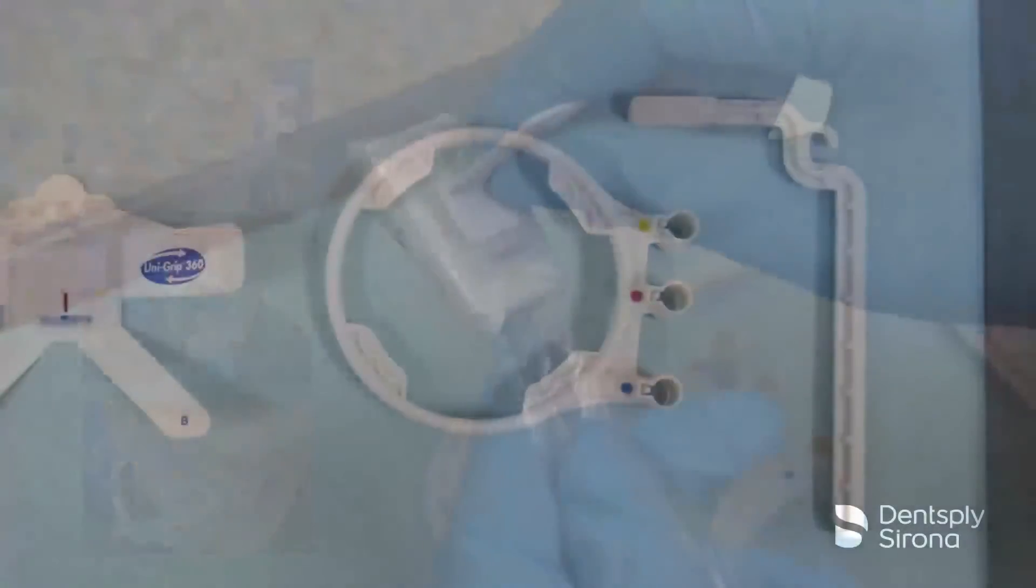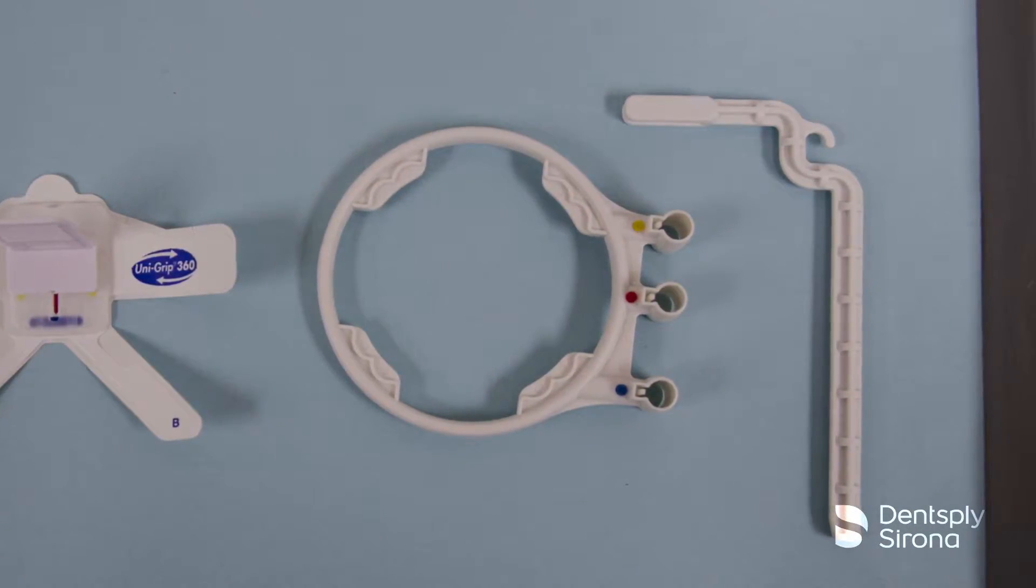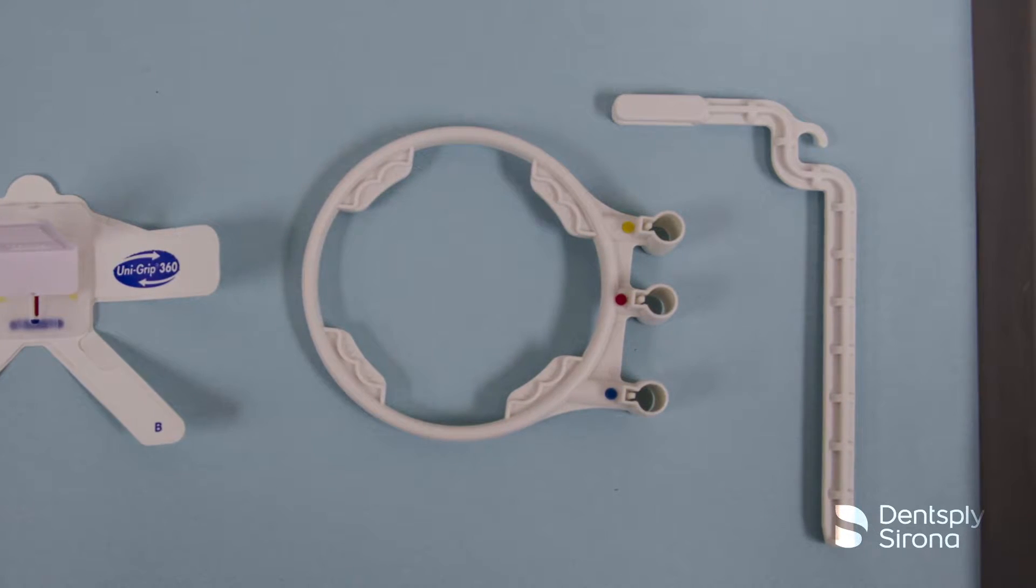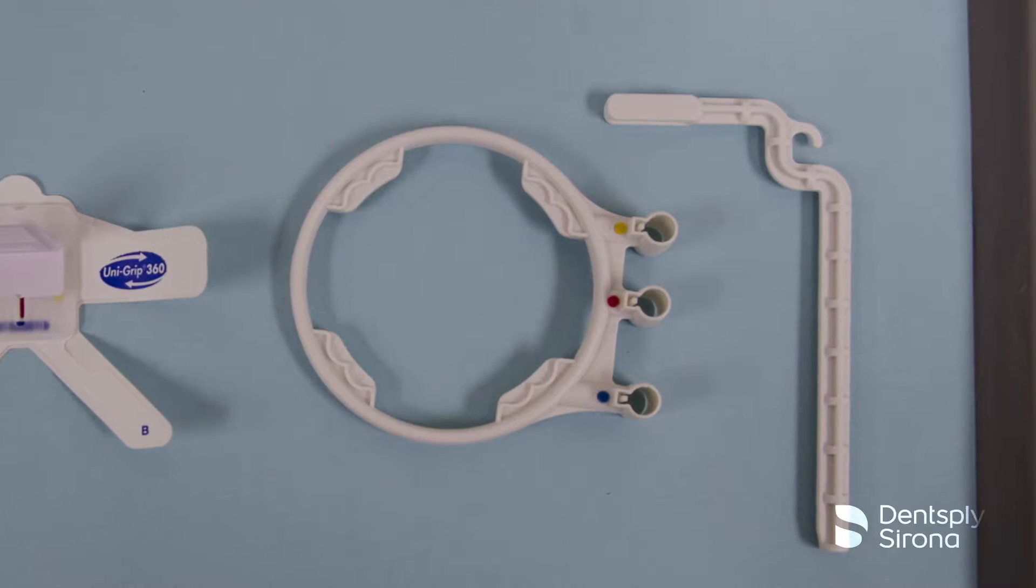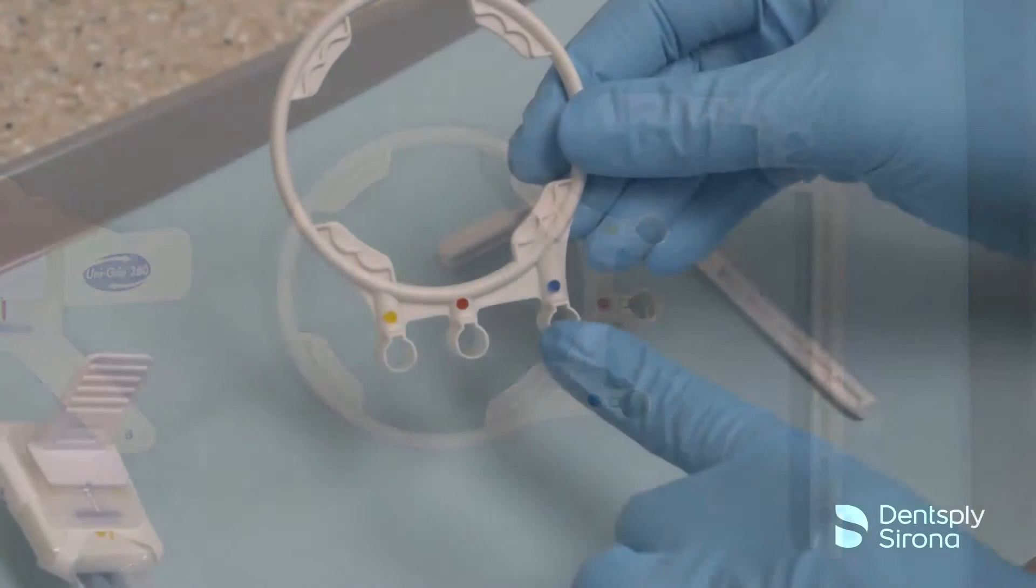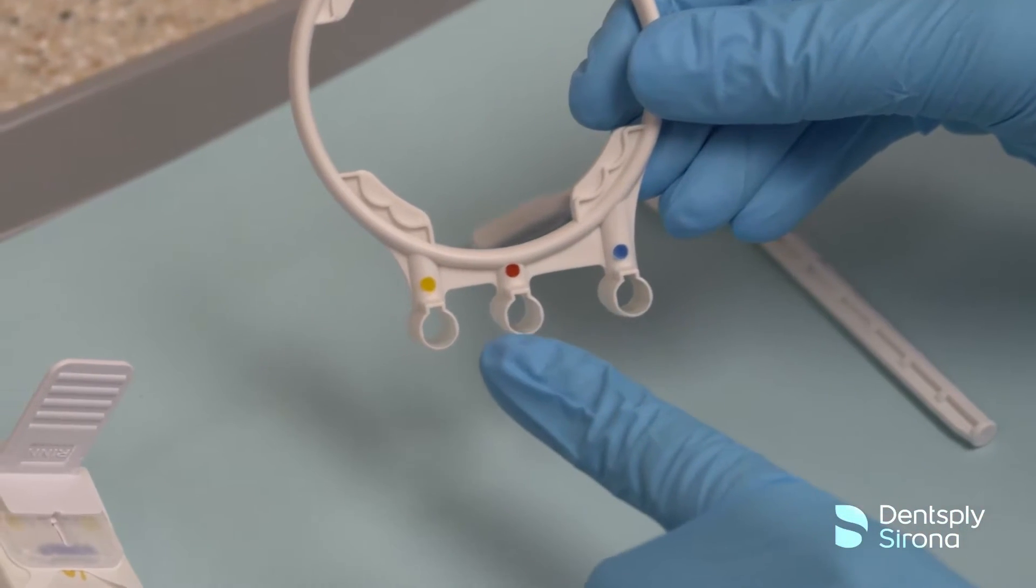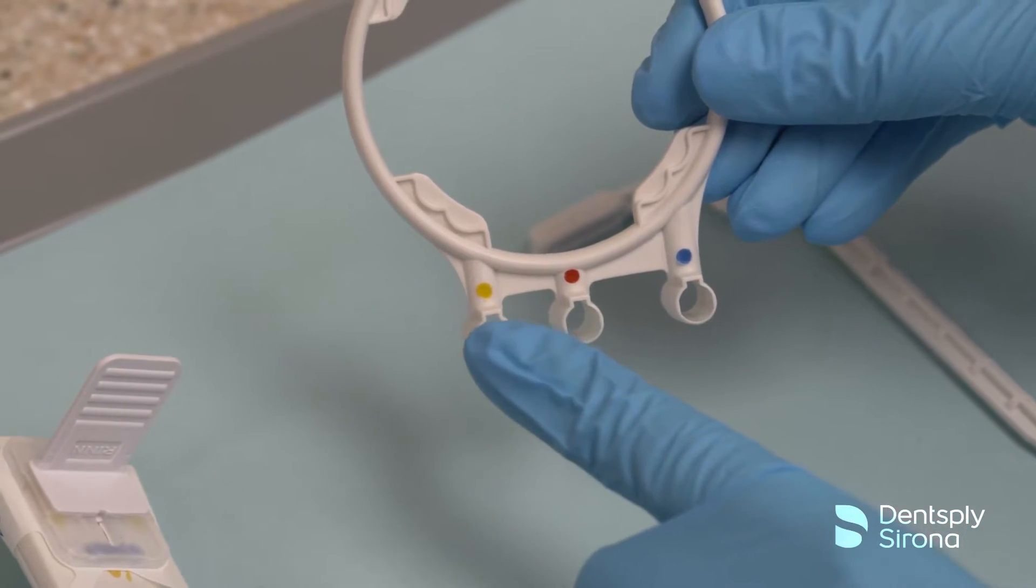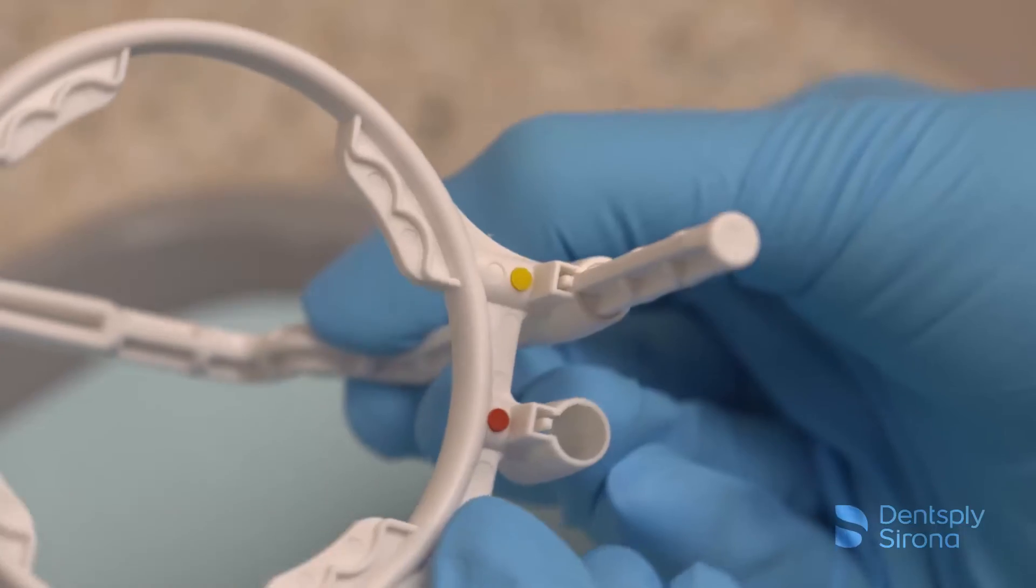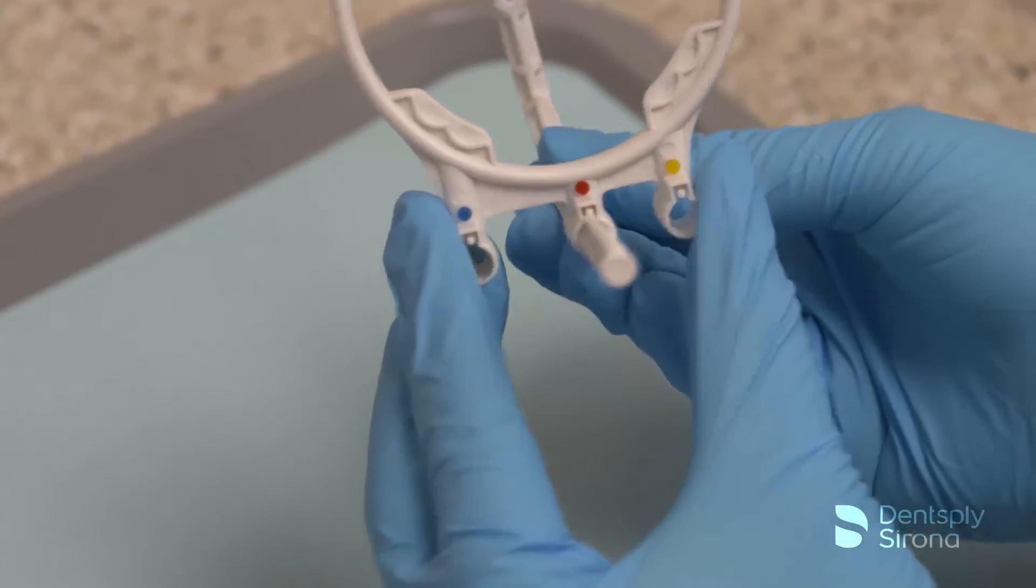The Unigrip positioning arm and ring can be utilized with the Unigrip 360 Sensor Universal Holder. The positioning arm and ring is color-coded for quick assembly to align with the image being captured. The color coding is the same as the original Rinn XCP system: blue for anterior, yellow for posterior, and red for bitewing.